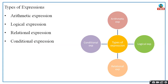There are different types of expressions in C language: arithmetic expressions, conditional expressions, logical expressions, and relational expressions. These are the basic four types of expressions in C programming language. We will see one by one what is arithmetic, logical, relational, and conditional.